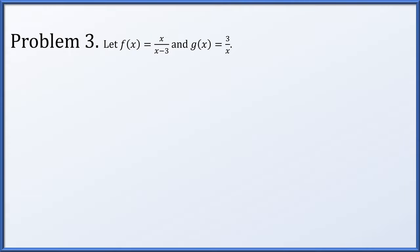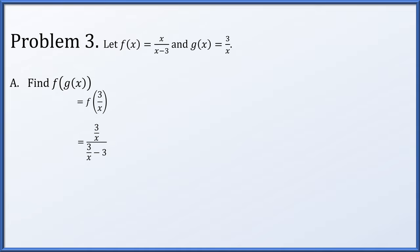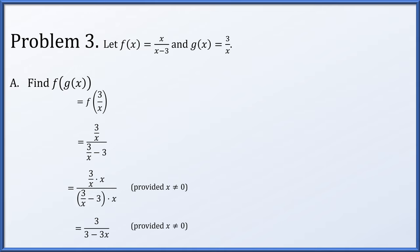Problem 3: let f(x) = x/(x-3) and g(x) = 3/x. First, compute f(g(x)). We take g(x) = 3/x and plug it into f, giving (3/x) / (3/x - 3). Multiplying numerator and denominator by x — which is only valid when x ≠ 0 — we get 3/(3 - 3x). I want to stress that the domain of f(g(x)) does not include x = 0, because 0 cannot be plugged into g.